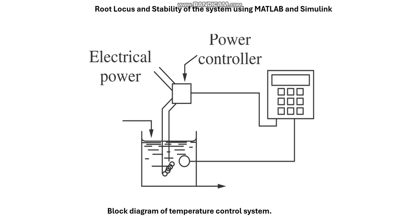This is a feedback process control system for temperature control inside a tank. We have a sensor here that senses the temperature and sends a signal to the controller. The controller compares the temperature to the set point, and if there is some error it takes action and sends the signal to the final control element, which may be electrical power or steam flow rate.